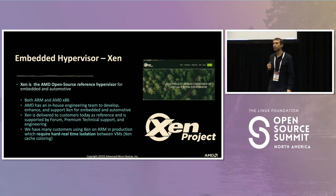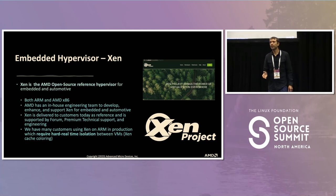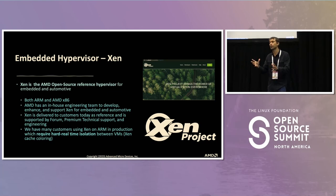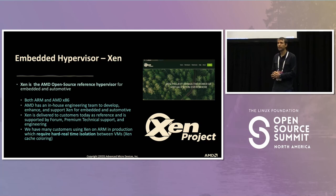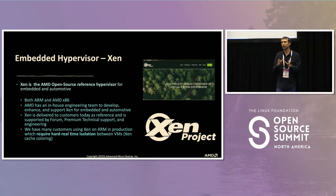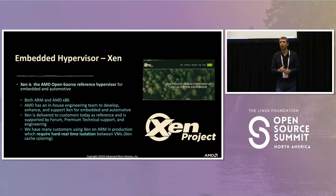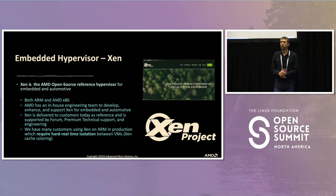Many of our customers use Xen to separate — as you saw in the previous talk — a real-time operating system like Zephyr from Linux, a non-real-time or QM operating system. Hard real-time and ensuring that the real-time OS is free from interference, no matter what the Linux environment does, is very important. Safety people call it freedom from interference, and many of our customers already use this in production.